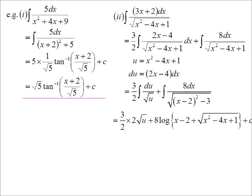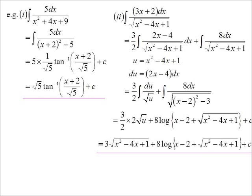Now, of course, all I've got to do is substitute back into the u. The 2s cancel. And I have my final answer. 3 root x squared minus 4x plus 1 plus 8. The log of x minus 2 plus the square root of x squared minus 4x plus 1. Isn't that beautiful? See, now we get some really nice things.